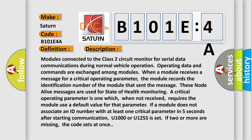Modules connected to the class two circuit monitor for serial data communications during normal vehicle operation. Operating data and commands are exchanged among modules. When a module receives a message for a critical operating parameter, the module records the identification number of the module that sent the message.